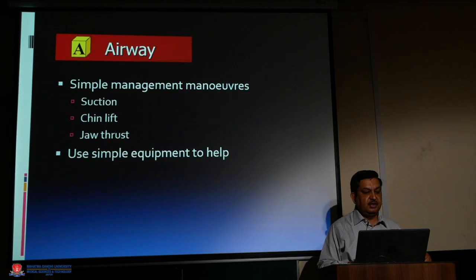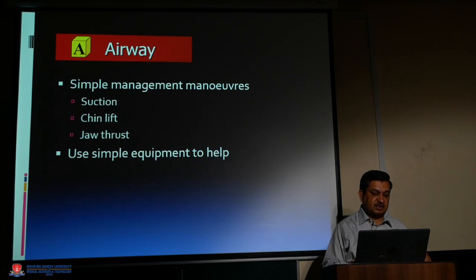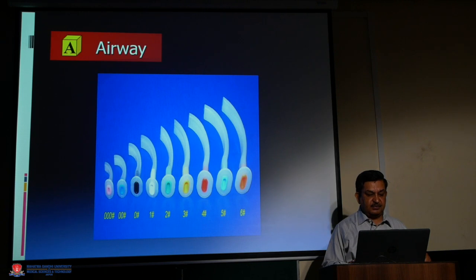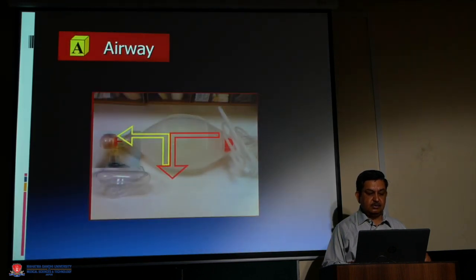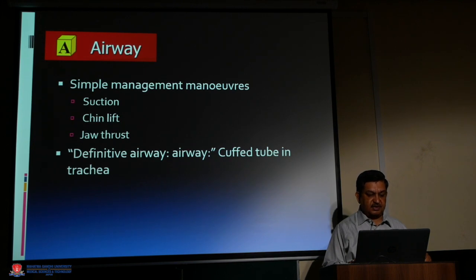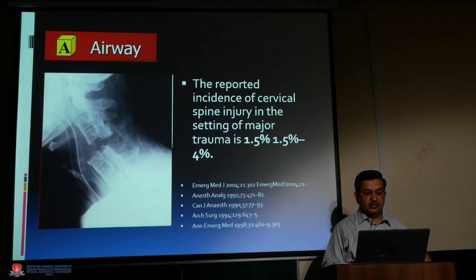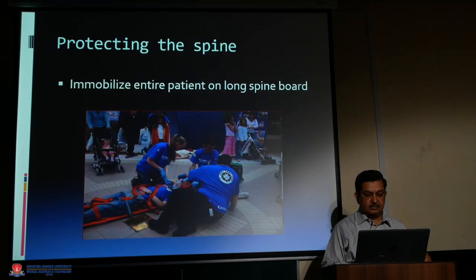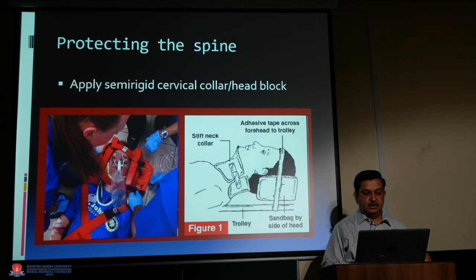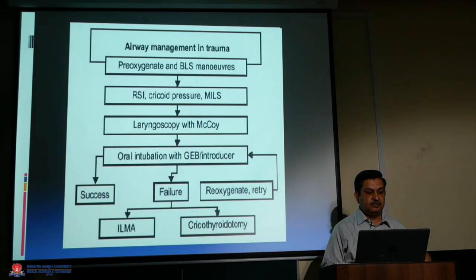Primary survey components: Airway with cervical spine protection, Breathing and oxygenation, Circulation and stopping bleeding, Disability and neurostatus, Exposure and environment including body temperature. Simple airway management maneuvers include suction, chin lift, and jaw thrust. A definitive airway requires a cuffed tube in the trachea — always think about the cervical spine. The reported incidence of cervical spine injury in major trauma is 1.5 to 4 percent. Protect the spine by immobilizing the entire patient on a long spine board with adhesive tape across the forehead and a stiff neck collar.